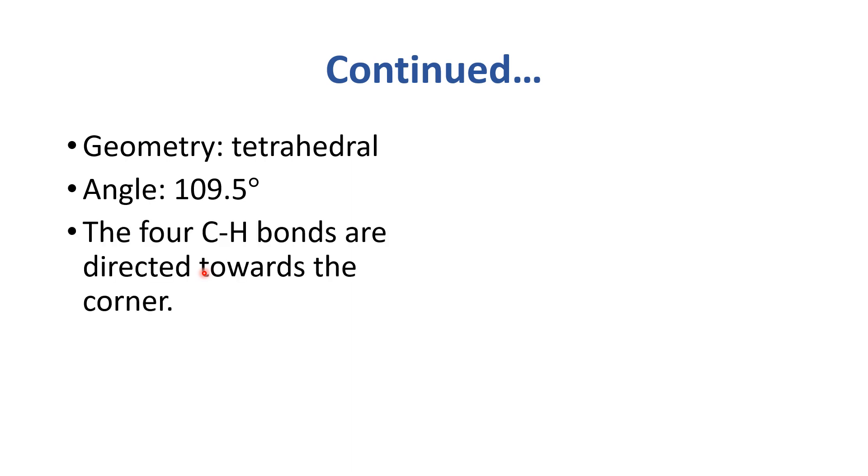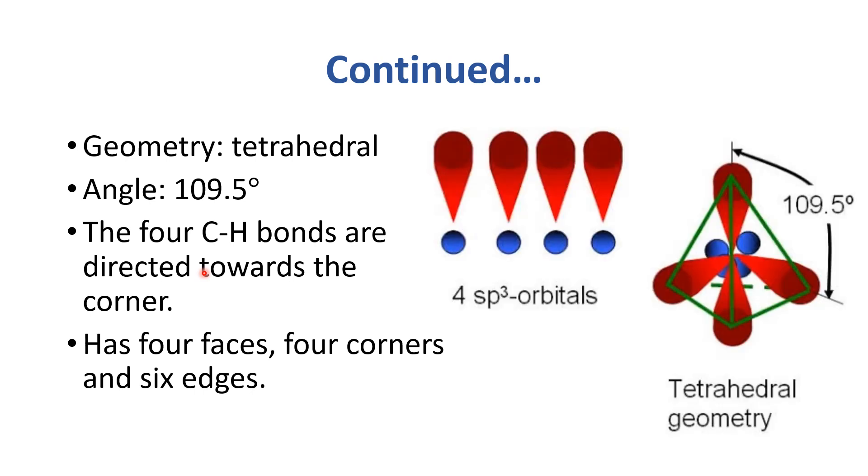Methane has a tetrahedral geometry with a bond angle of 109.5 degrees. The four C-H bonds are directed towards the corners. The four sp³ hybrid orbitals arrange themselves along the tetrahedron and form bonds with hydrogen atoms. The geometry is tetrahedral with a 109.5 degree angle.